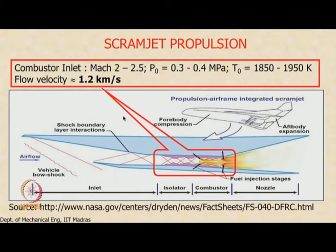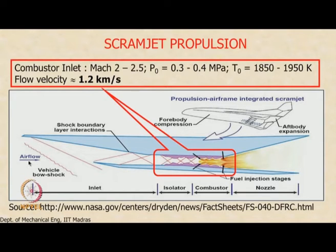In the last class, we were looking at the challenges we face in designing a scramjet combustor. To recap briefly: the flow is decelerated from a free stream Mach number of 7.5 to around Mach 2 to 2.5 at entry to the combustor. The free stream stagnation pressure is around 1 to 1.2 MPa, and by the time the flow reaches the isolator, stagnation pressure reduces to about 0.3 MPa — a recovery of only about 30%.